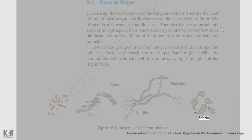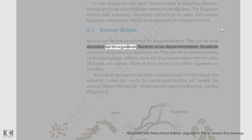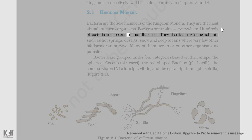Bacteria of different shapes are shown in Figure 2.1. Kingdom Monera: Bacteria are the sole members of the kingdom Monera. They are the most abundant microorganisms and occur almost everywhere. Hundreds of bacteria are present in a handful of soil. They also live in extreme habitats such as hot springs, deserts, snow, and deep oceans where very few other life forms can survive.